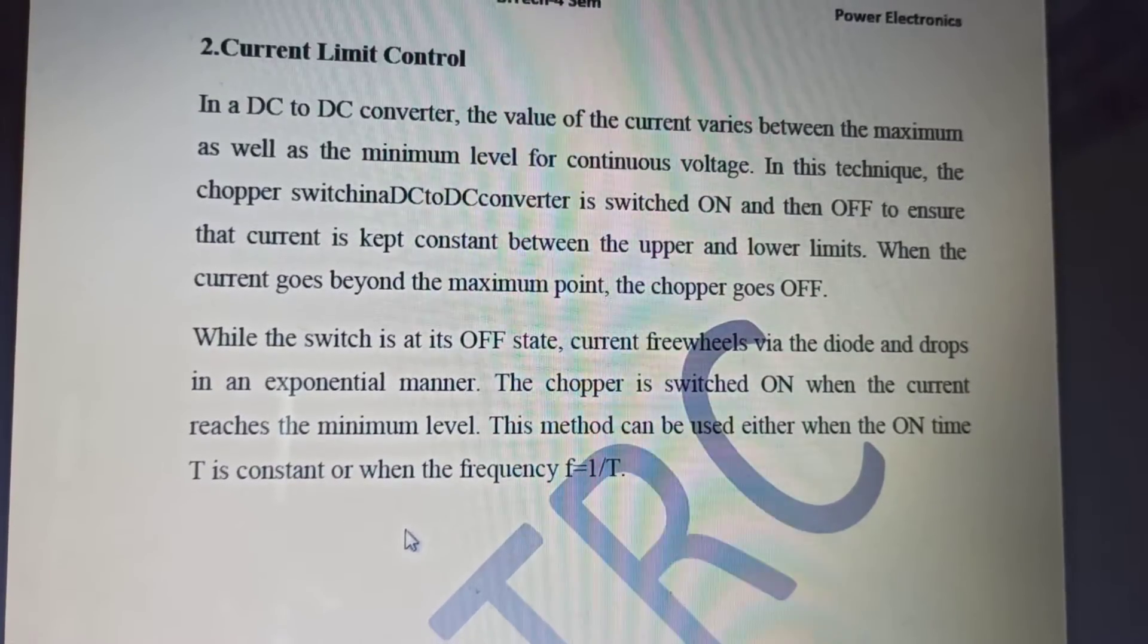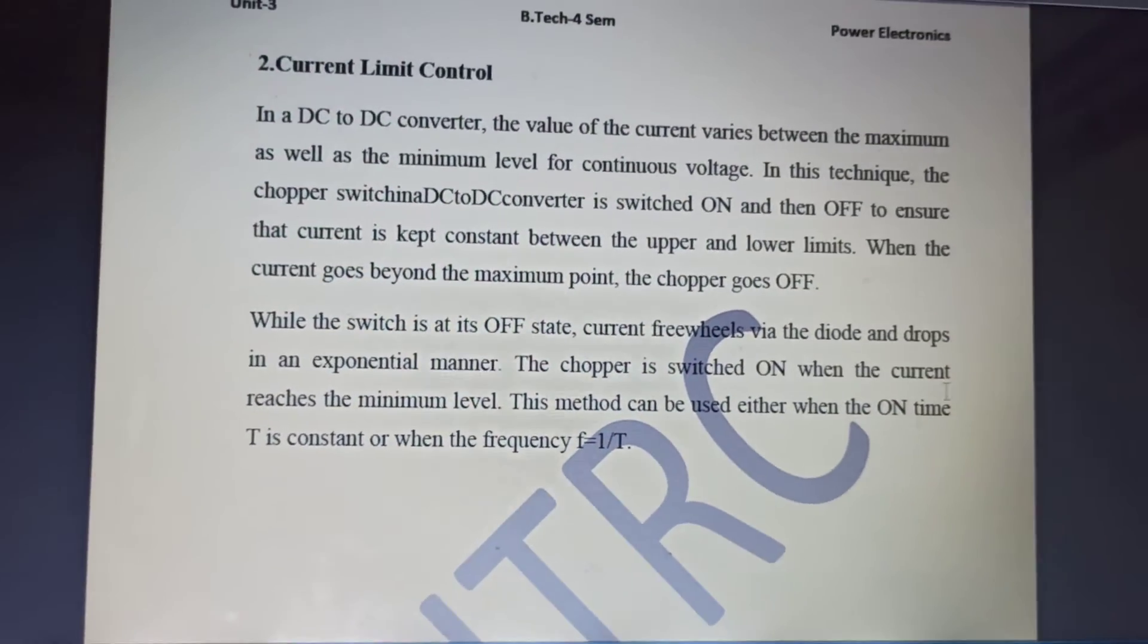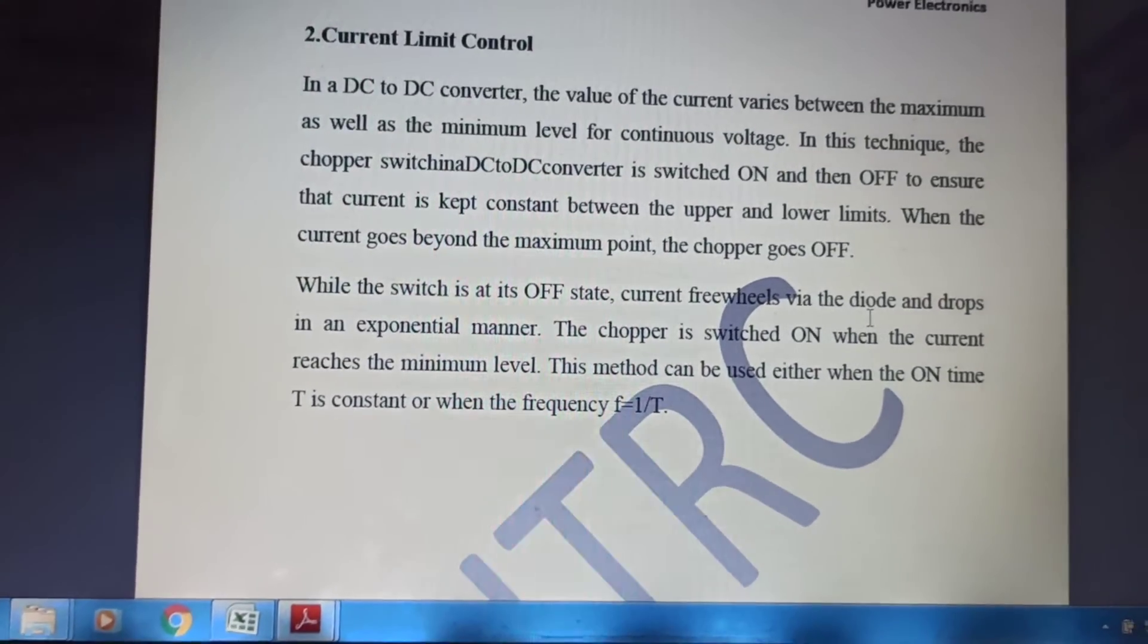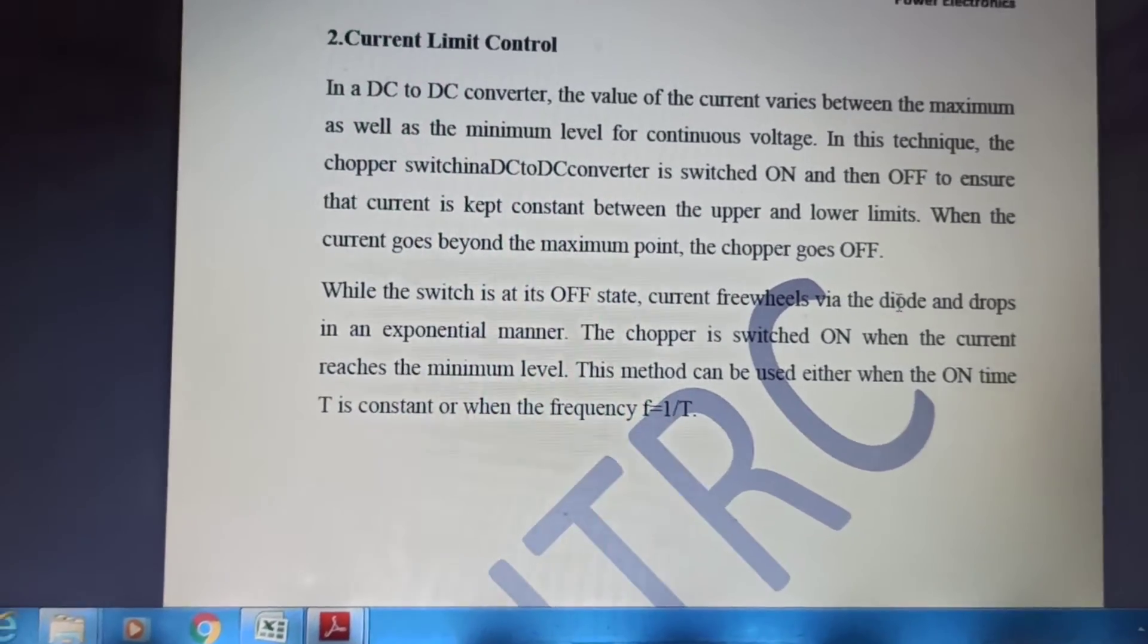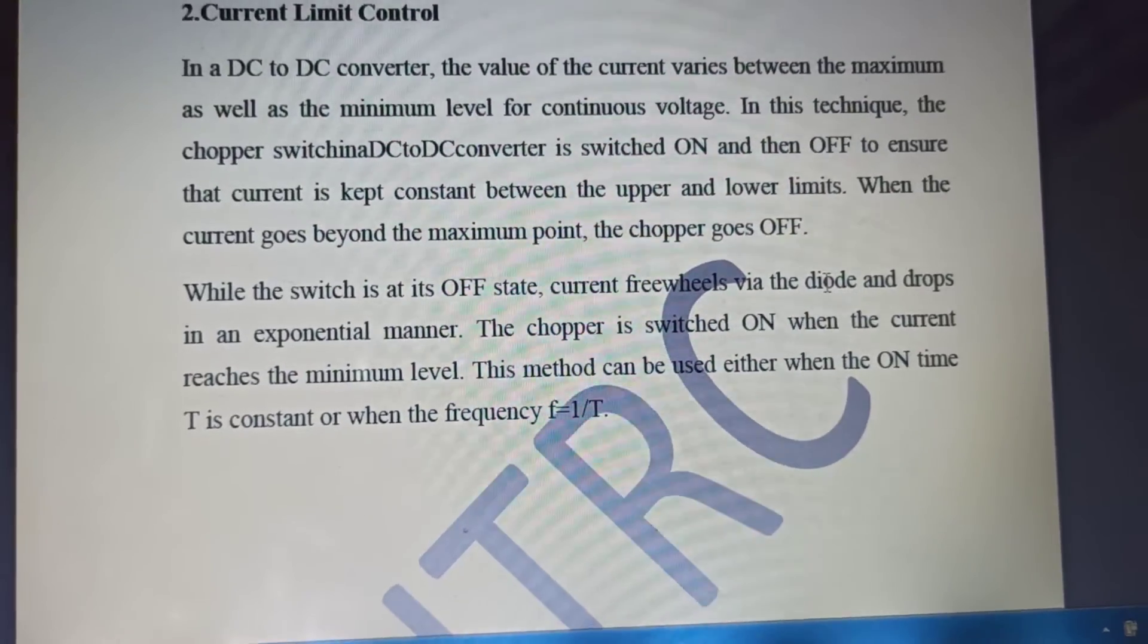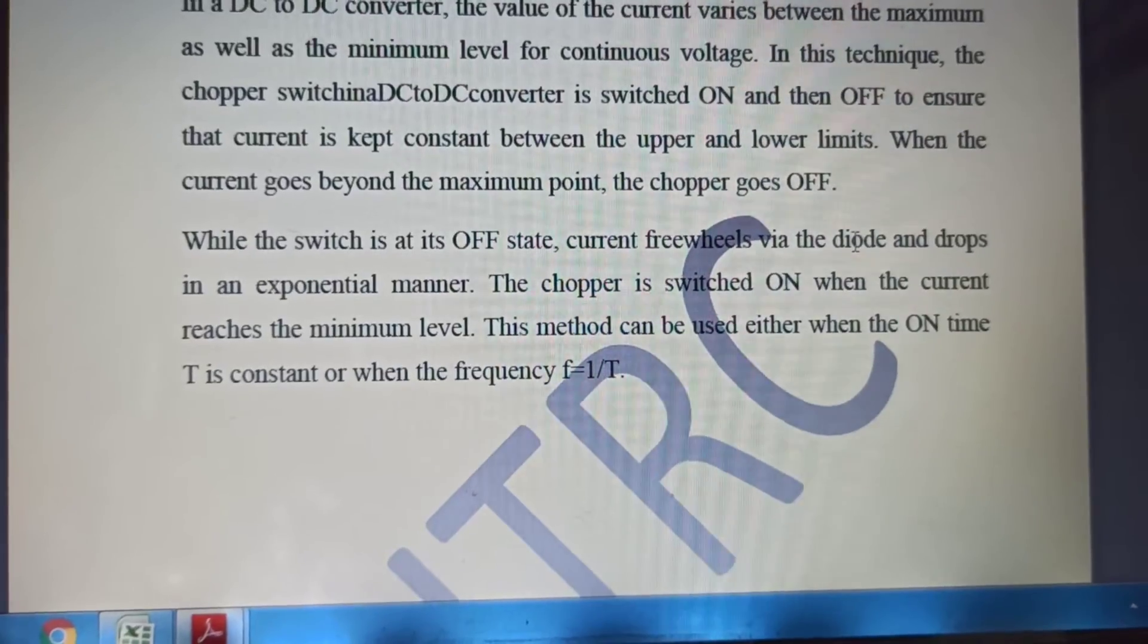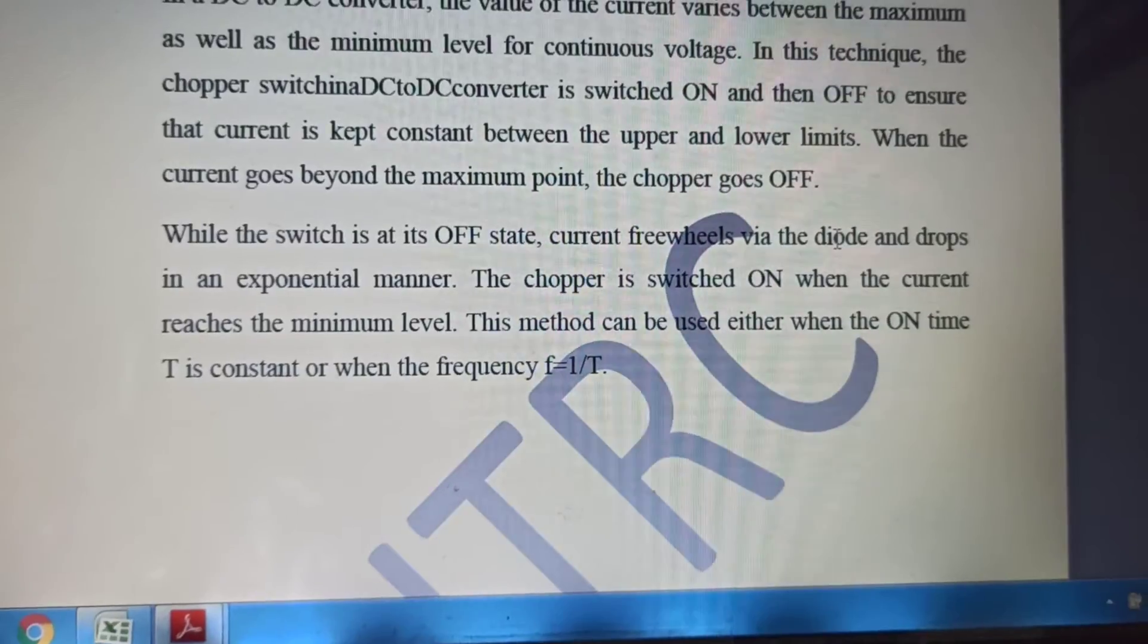When the switch is in its off state, as it is written here, current freewheels via a diode. It will freewheel through the diode and then it will discharge in an exponential manner. Obviously, the discharge will be exponential. It will follow I_0max e^(-t/RC). This is clear.